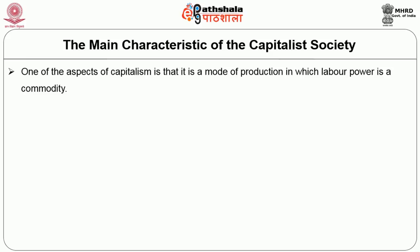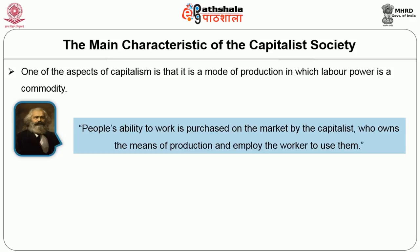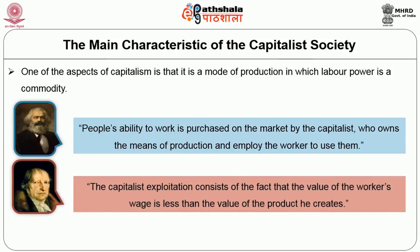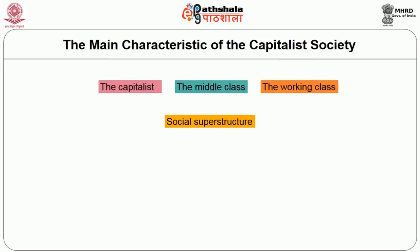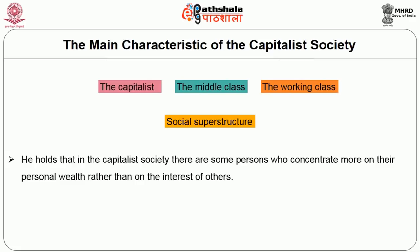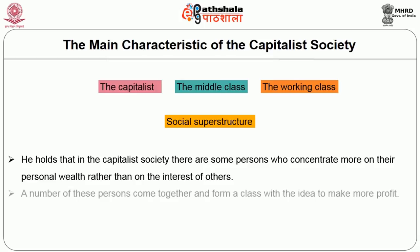One of the aspects of capitalism is that the mode of production, in which labour power is a commodity, is controlled by the ruling class. People's ability to work is purchased on the market by the capitalist who owns the means of production and employs the worker to use them. Engels supports Karl Marx by saying that capitalist exploitation consists of the fact that the value of the worker's wage is less than the value of the product he creates. The social superstructure is divided into three classes: the capitalist, the middle class, and the working class. Marx posits the aspects of personal interests and class interests — in capitalist society, some people concentrate more on their personal wealth, and a number come together to form a class with the idea to make more profit.